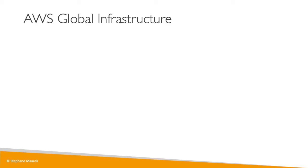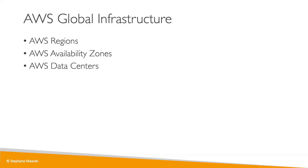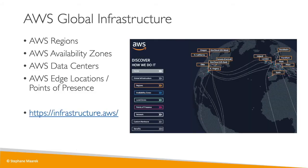AWS is global, and this is where we'll learn more specifics about how it works. We have AWS regions, availability zones, data centers, edge locations, and points of presence — all of which can be represented on a map. Let's go to this website to have a quick look.